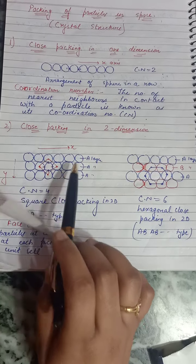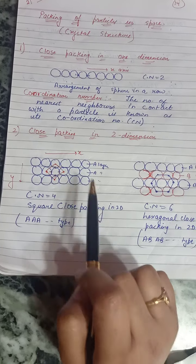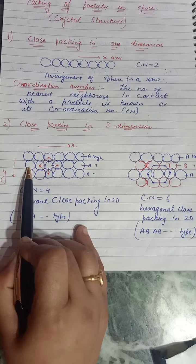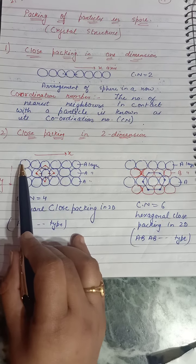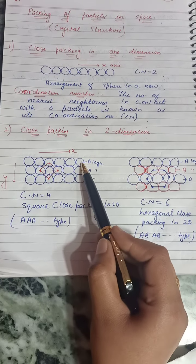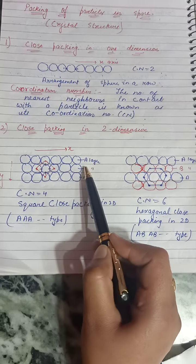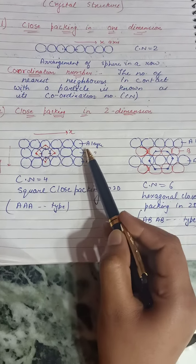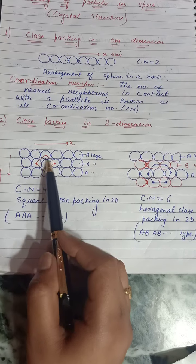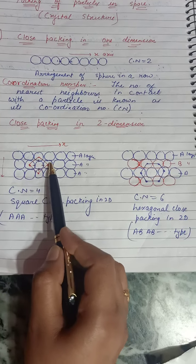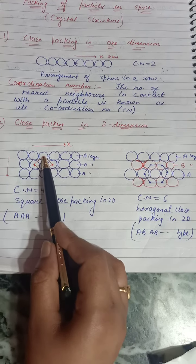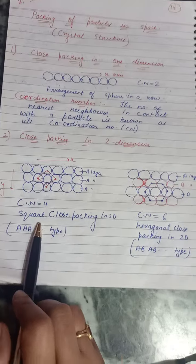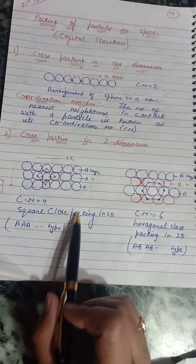Now let's recall close packing in two dimensions. There are two types. The first is square close packing: you place one row of particles, then place the second row just below so that the spheres of the second row lie directly below those of the first layer. The layers are identical. If you join the centers of touching spheres, you get a square, and the coordination number is four.